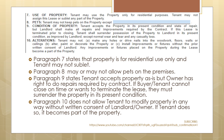Paragraph 7 states that the property is for residential use only and the buyer-tenant cannot sublet the property. Paragraph 8 may or may not allow pets on the premises, identified in the blank space. Paragraph 9 states that the tenant accepts the property as-is, but the owner has the right to do repairs that might have been required by the contract. If the buyer-tenant cannot close on time or wants to terminate the lease, they must surrender the property in its present condition. Paragraph 10 does not allow the tenant to modify the property in any way without the written consent of the landlord-owner; if the tenant does so, it becomes part of the property.